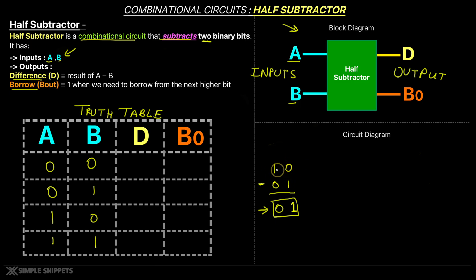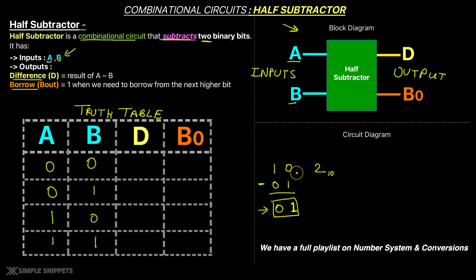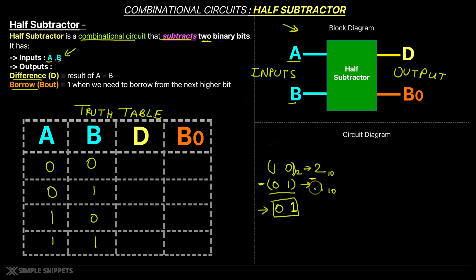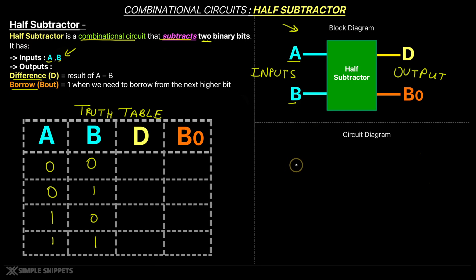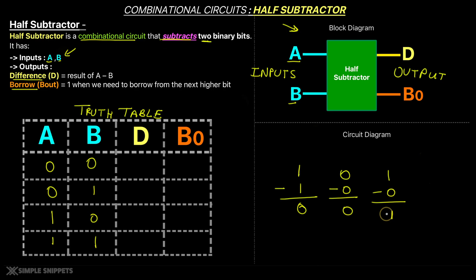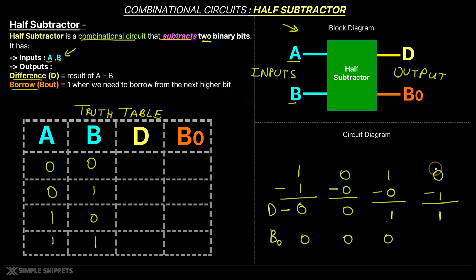If you convert those binary numbers 10 and 01 to their decimal equivalents, they are 2 and 1 respectively. So 2 minus 1 gives you 1 in decimal, which matches the binary result 01 — also equal to 1. That confirms the subtraction is correct. For the other simple cases: 1 minus 1 gives 0; 0 minus 0 gives 0; 1 minus 0 gives 1. In none of these cases do you get a borrow — borrow is 0. However, when you do 0 minus 1, the output is 1 because you take an imaginary borrow, making the 0 become 2, so 2 minus 1 is 1, but this time the borrow becomes 1.